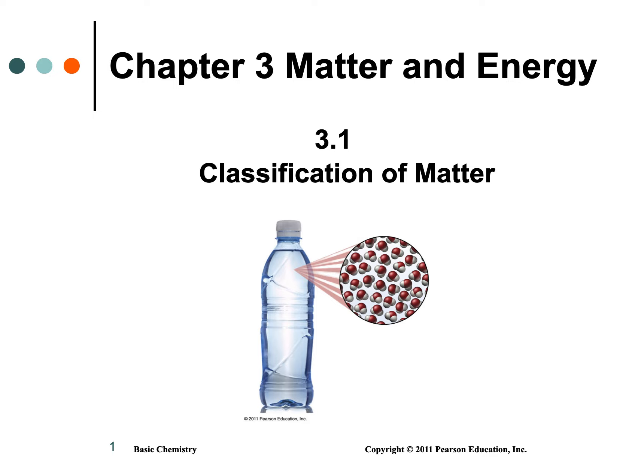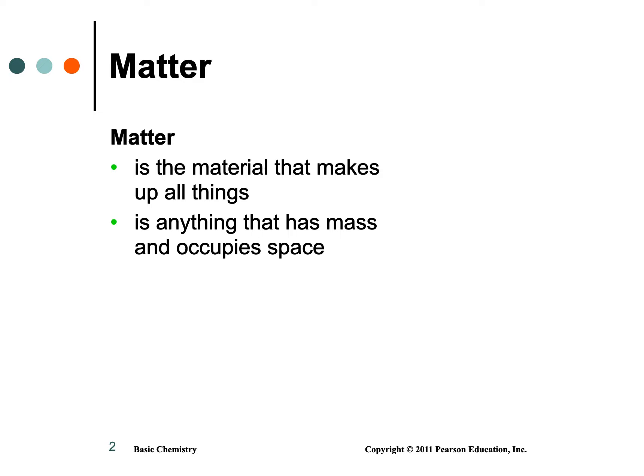In 3.1 in Timberlake chemistry, today we're going to talk about how matter is classified. Matter is anything that has mass and takes up space — anything that has weight or mass where there's actually stuff crammed into a certain location. Right now there are about 118 types of matter in the universe called elements. About 91 or 92 are naturally occurring and can be dug out of the ground.